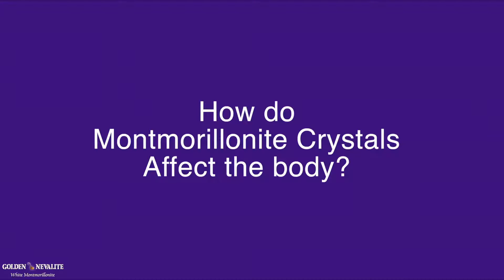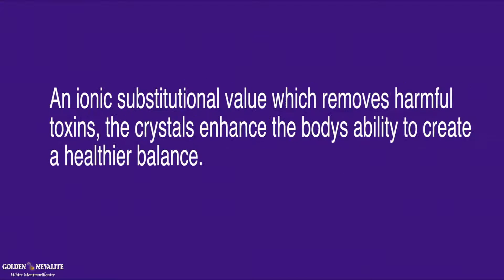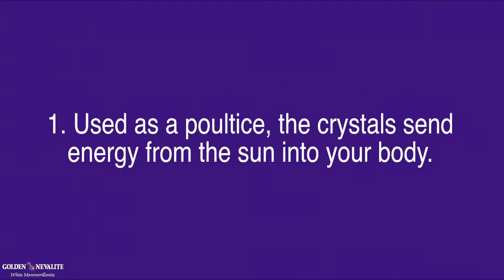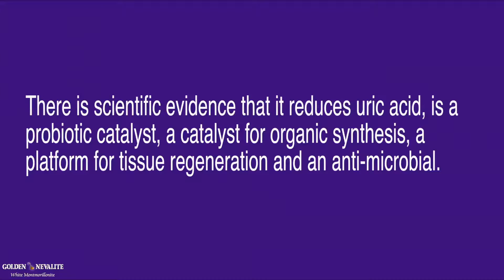How do Montmorillonite crystals affect the body? Montmorillonite is an all-natural anti-inflammatory that, via far infrared emissions, changes the water in the blood, giving it the ability to pass freely through areas of the body that are blocked because of various maladies. An ionic substitutional value removes harmful toxins, and the crystals give the body the ability to create a healthy balance. Used as a poultice, the crystal sends energy from the sun into your body. The crystals absorb toxins as they travel through your digestive system. There is scientific evidence that it reduces uric acid. It is a probiotic catalyst, the catalyst for organic synthesis, a platform for tissue regeneration, and an antimicrobial.